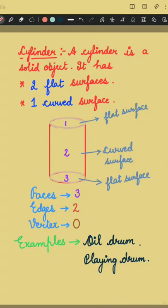Hi friends, today we are going to study about cylinder. A cylinder is a solid object. It has two flat surfaces and one curved surface. This is a flat surface, and this is also a flat surface. The middle one is the curved surface.